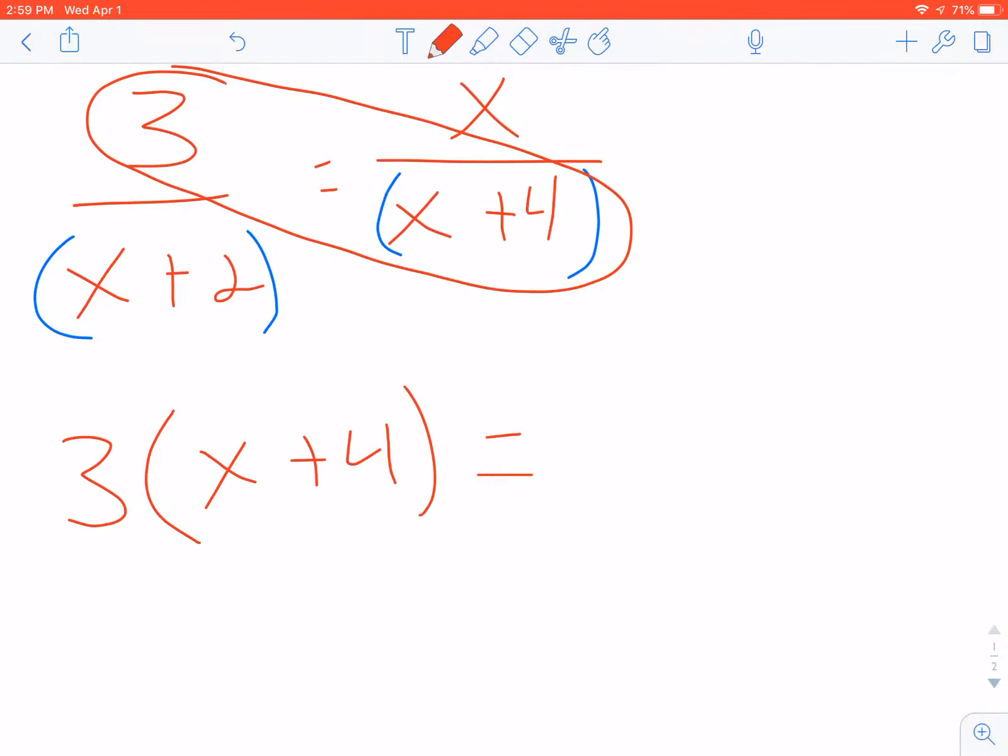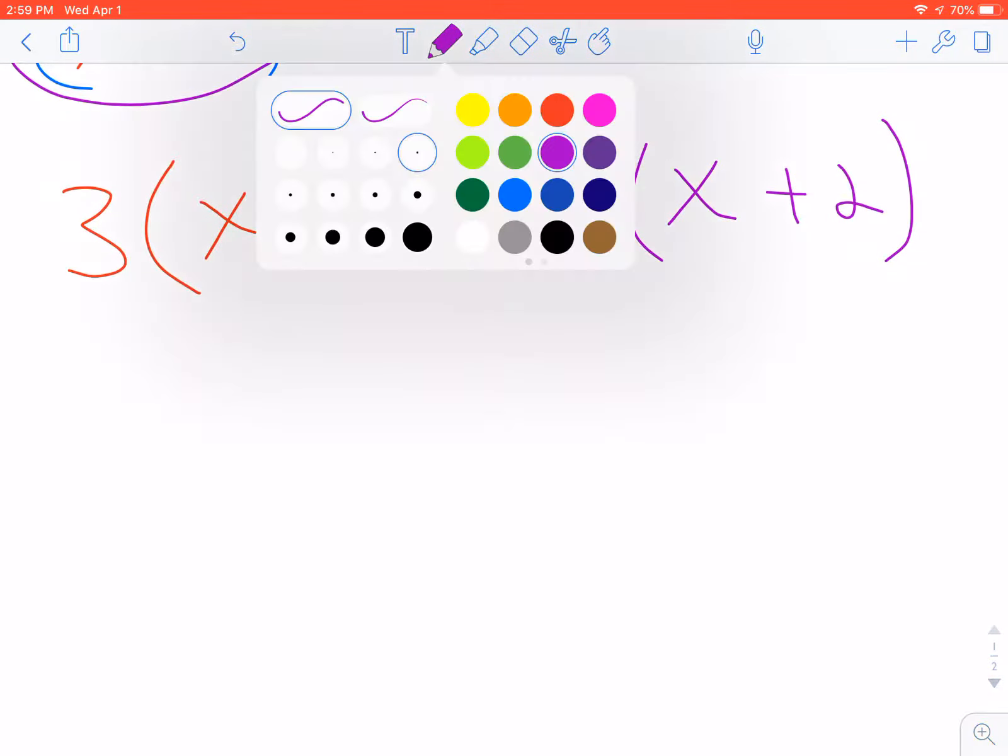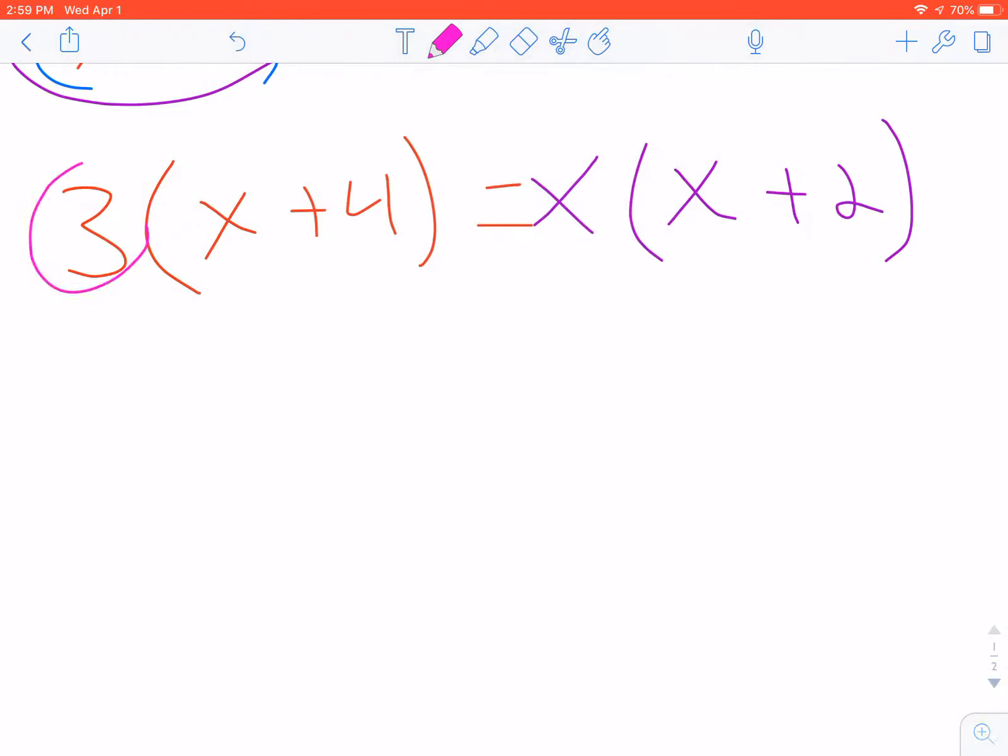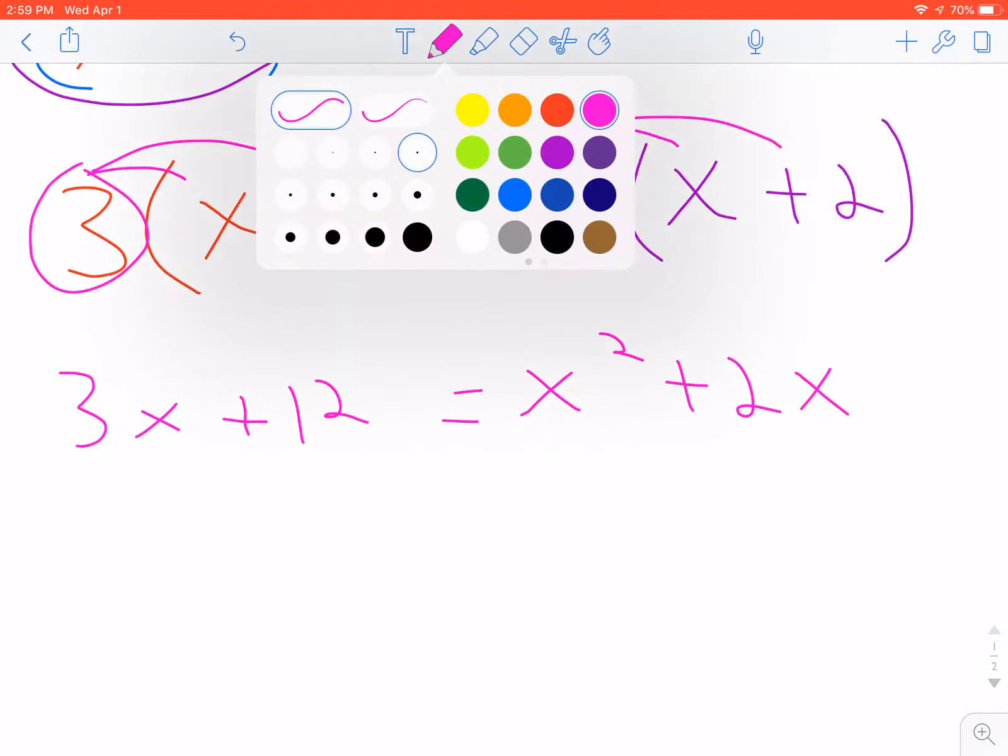So when I multiply 3 times (x+4) and then I also multiply x times (x+2), if I distribute this through, that will give me 3x+12 equals x squared plus 2x. Now I know that in this case I have to factor because I have an x squared in my equation.